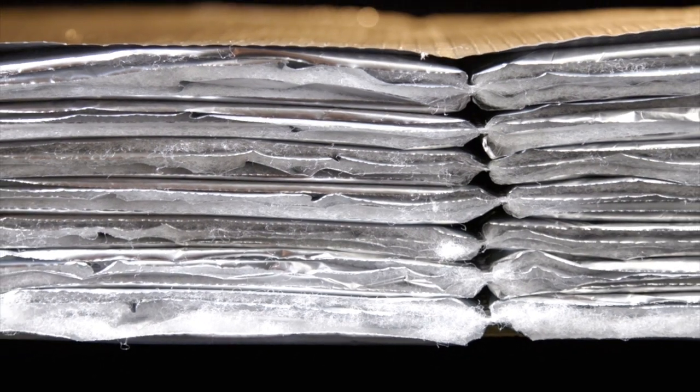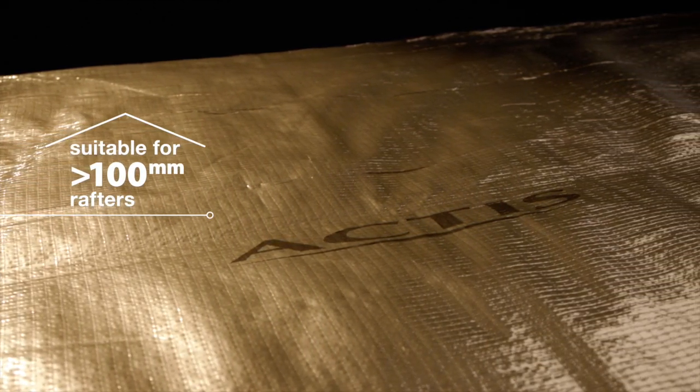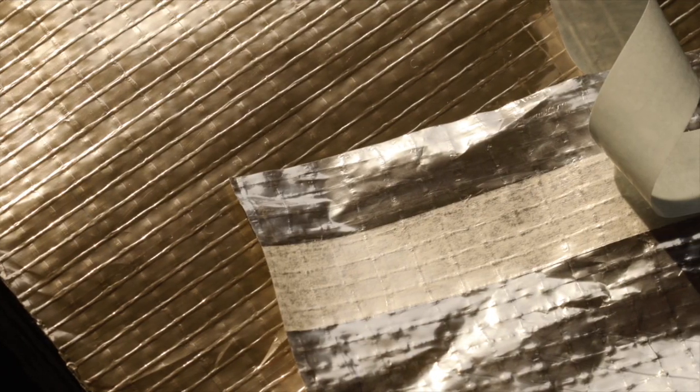Aeolus HC is installed in a continuous layer, so fitting is quick and easy with no time-consuming cutting between rafters or stud work. The integrated self-adhesive lap helps quickly seal joints.